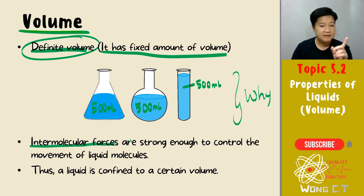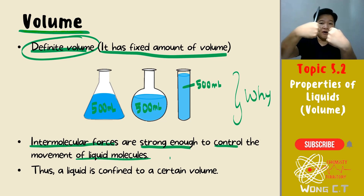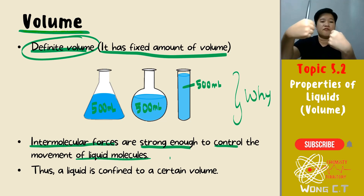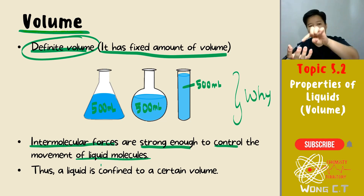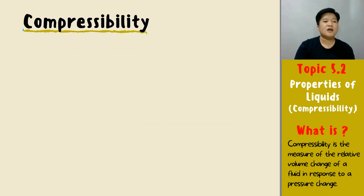The reason liquid has a definite volume is because the intermolecular force is strong enough to control the movement of the liquid. Even though it's not strong enough to hold molecules in a fixed position, it is strong enough to control their movement so molecules cannot move further away from each other. That's why liquid has a fixed volume.